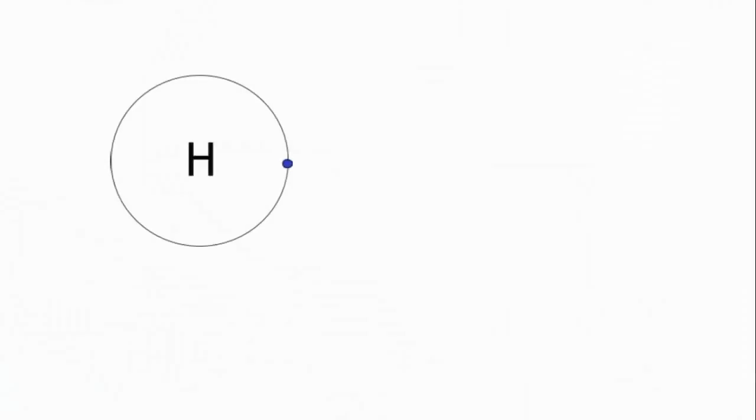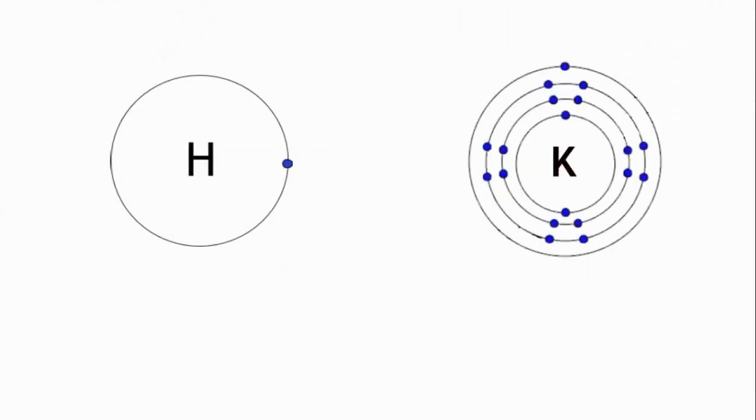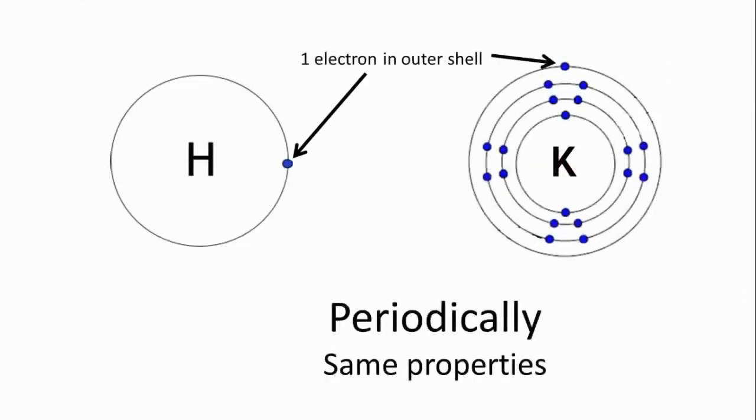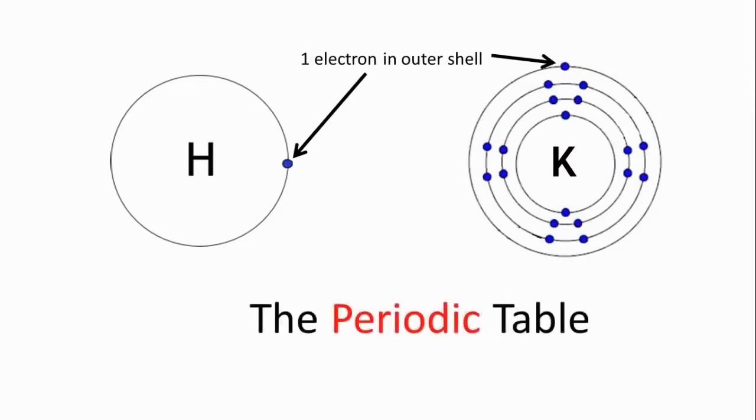As you move from the light elements to the heavy elements, you keep periodically coming across the same properties, which is why it's called the periodic table.